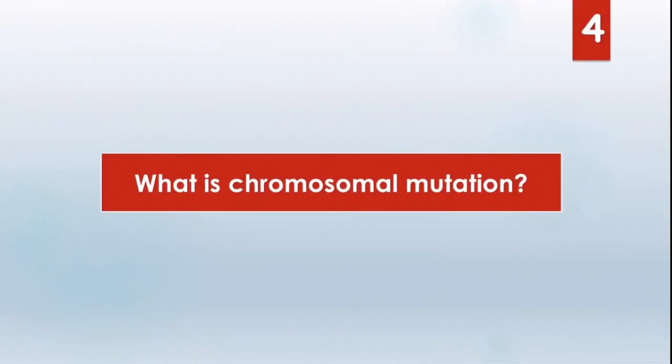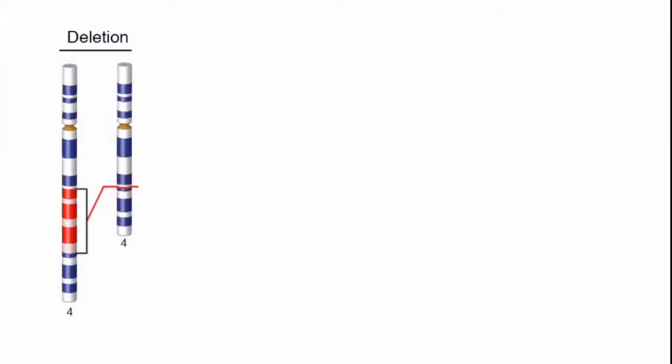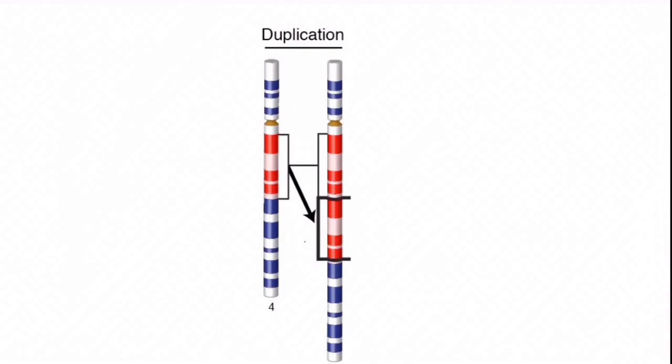Now what is chromosomal mutation? Chromosomal mutation can also occur in different ways. For example, in this picture, you can see a part is deleted from chromosome 4. And in the next picture, you can see the red part. This part is duplicated. And in the next picture, the part becomes upside down.